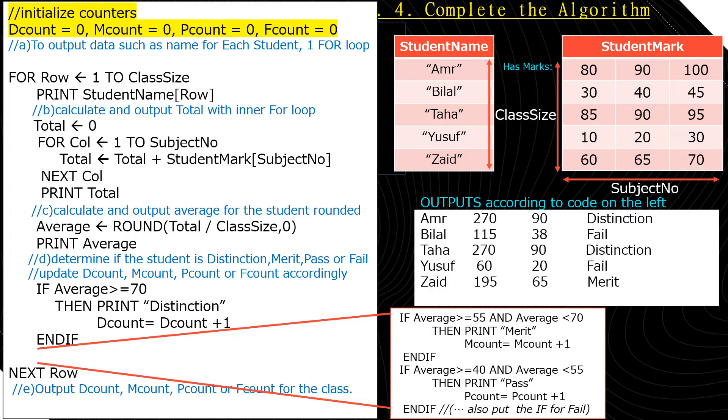All right, so part D wants us to determine what's the grade. Is it distinction, merit, pass, or fail? So we're going to have some selection statements. If the average was greater than or equal to 70, print distinction, and also update the distinction counter. So D count equals D count plus 1, because now we realize that somebody in the class has distinction. I would also put three more if statements identical to the one that we just read. You can see them on the right. So you can see if average is greater than or equal to 55 and average is less than 70, then print merit M count equals M count plus 1. And if average is greater than or equal to 40 and average is less than 55, then print pass P count is equal to P count plus 1. And also one more if statement, if the average is less than 40, then print fail and F count is equal to F count plus 1.